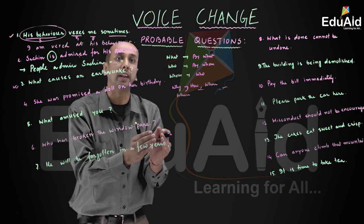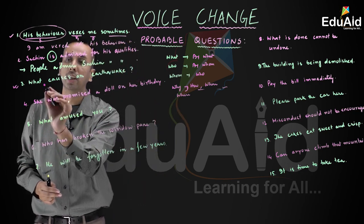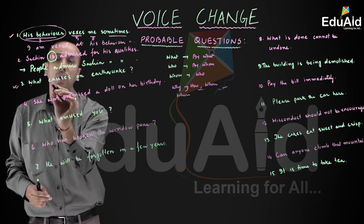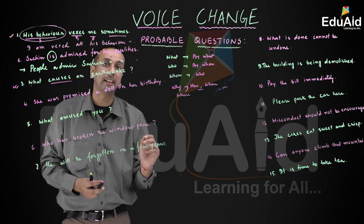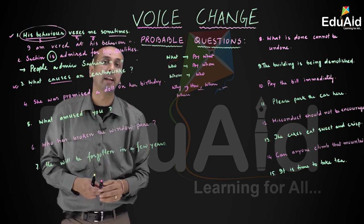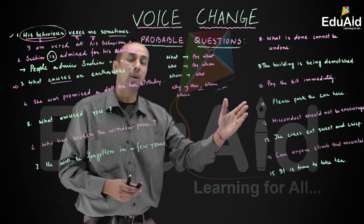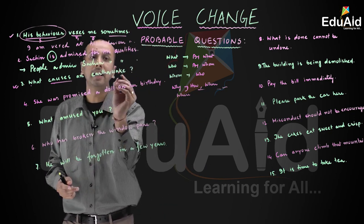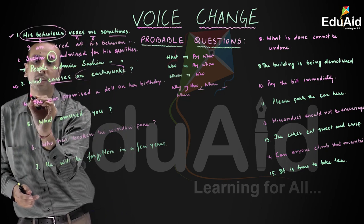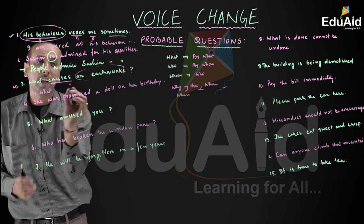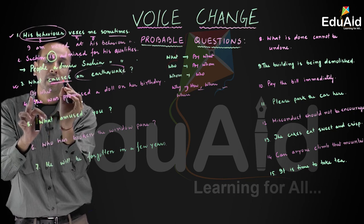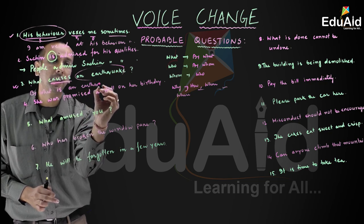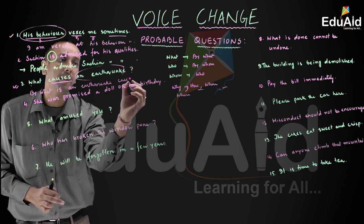Remember the structure of an interrogative sentence: after the wh-word, we put the auxiliary verb. In 'What causes an earthquake?', 'causes' tells us the tense is present. The object is 'an earthquake' — singular. In present tense the auxiliary verbs are am, is, and are. So the passive form is: 'By what is an earthquake caused?'